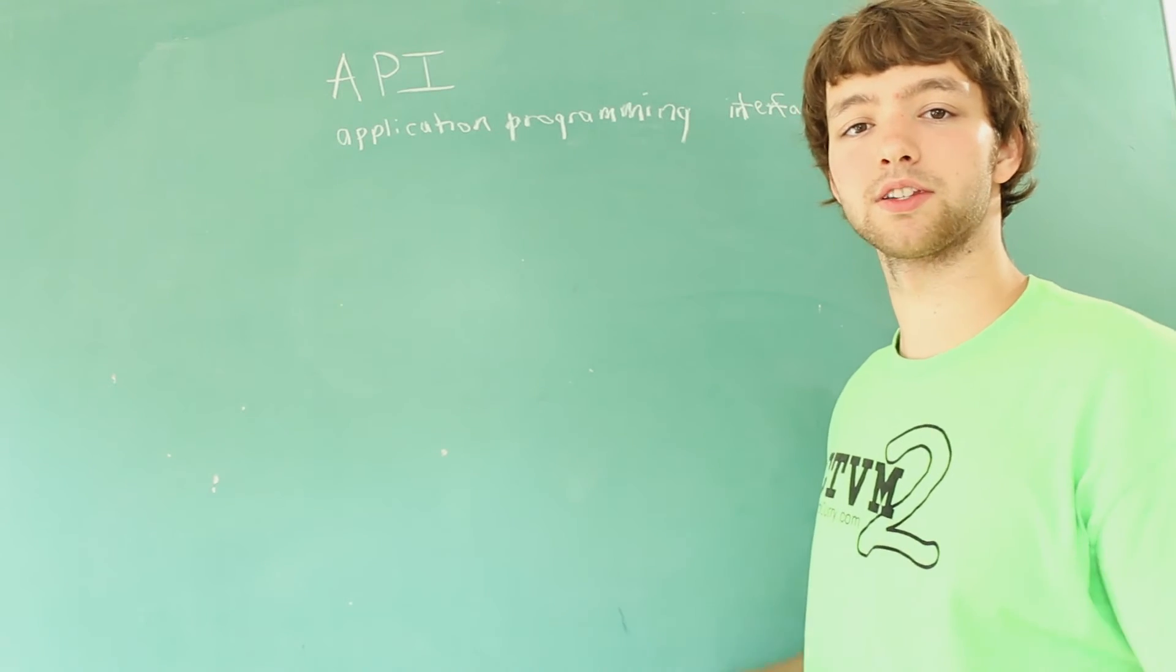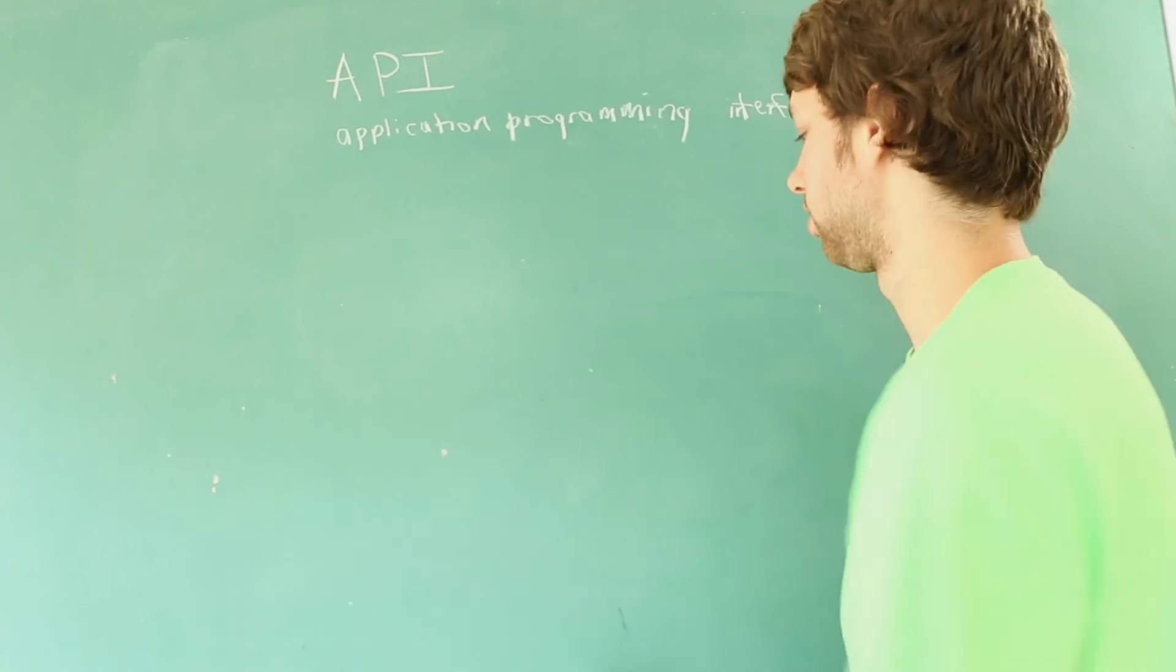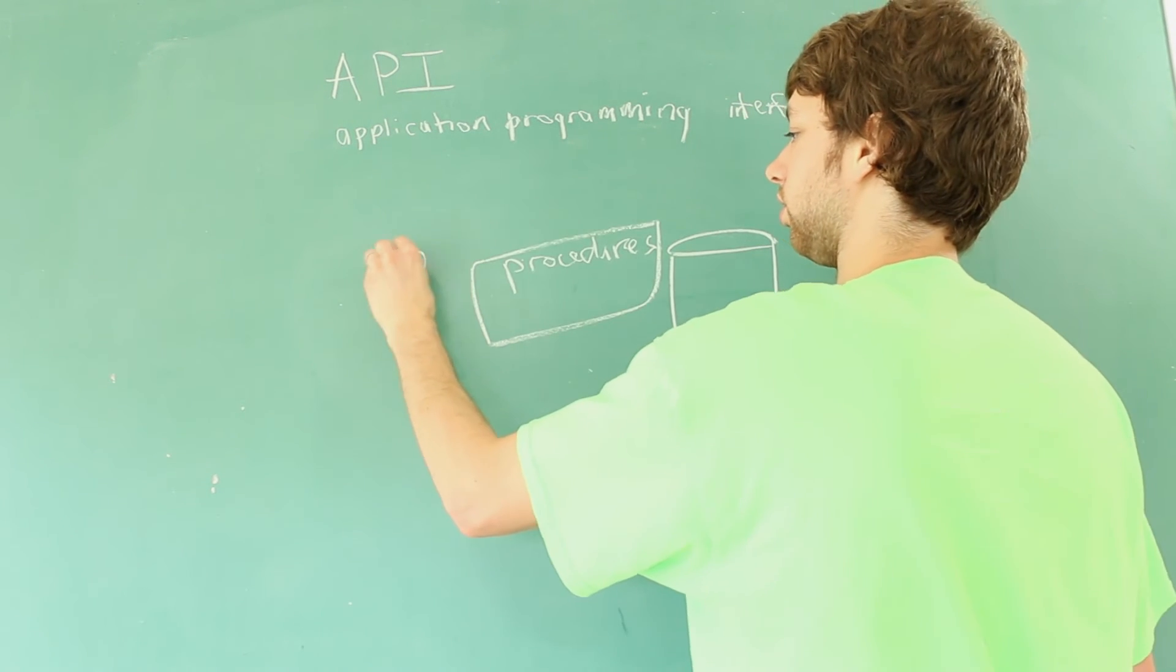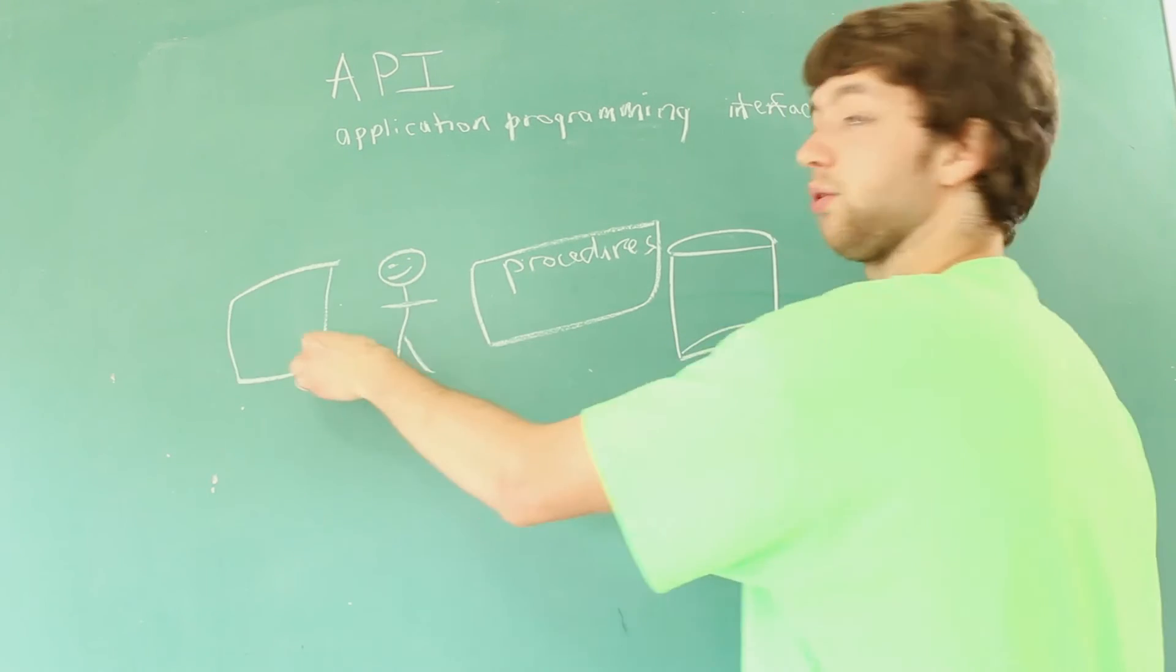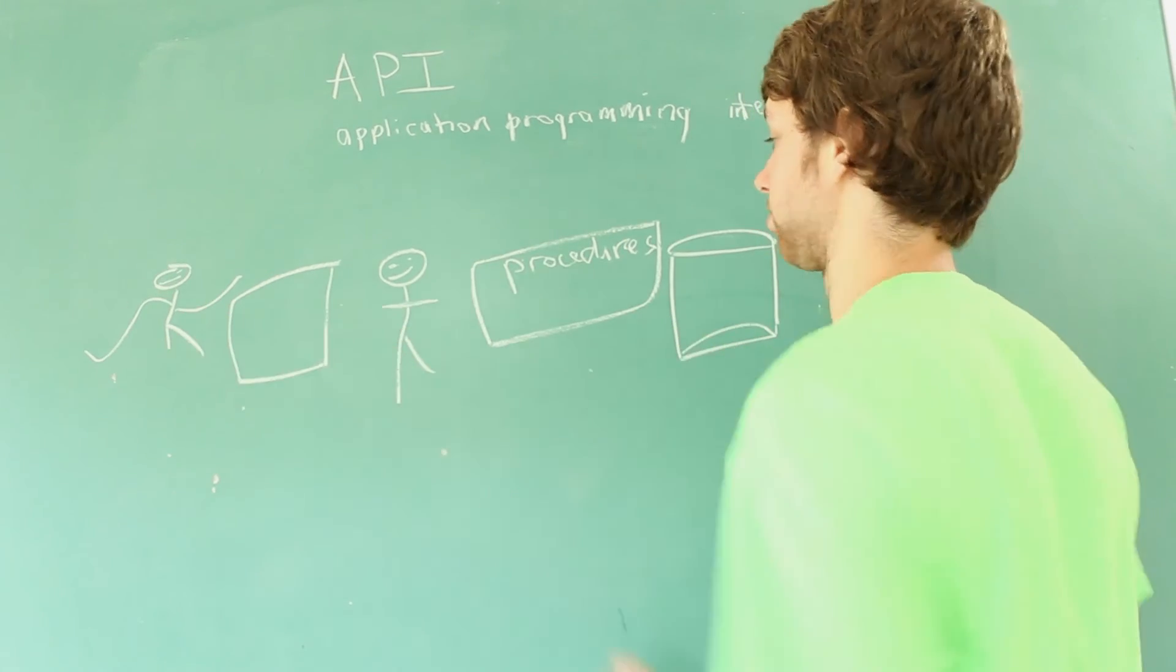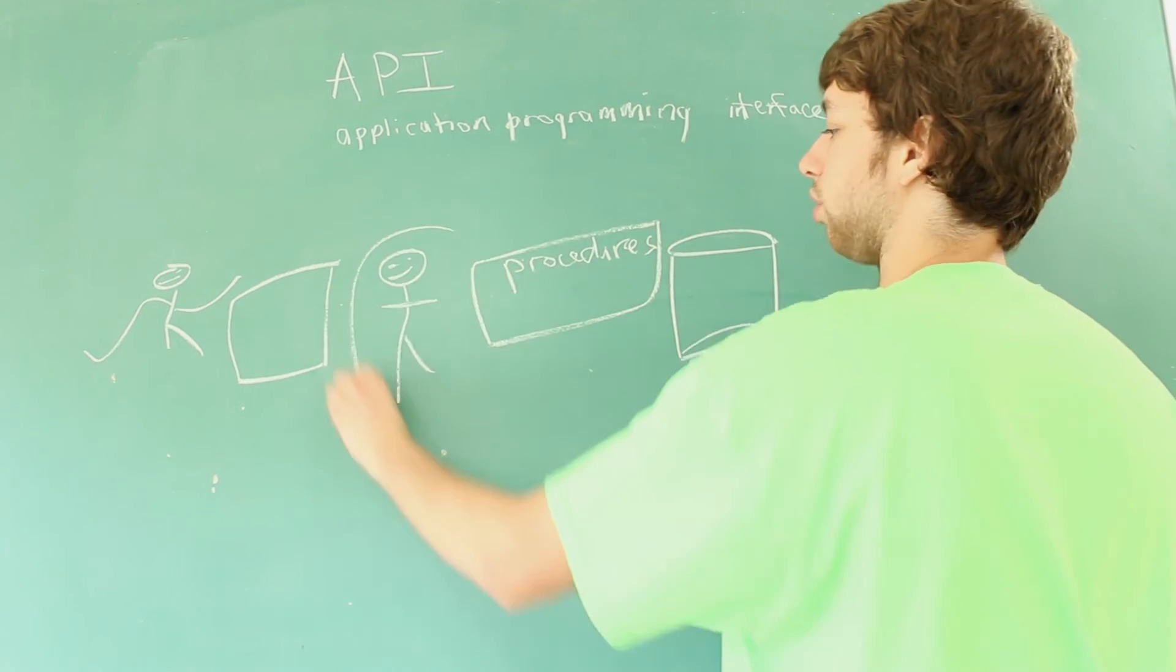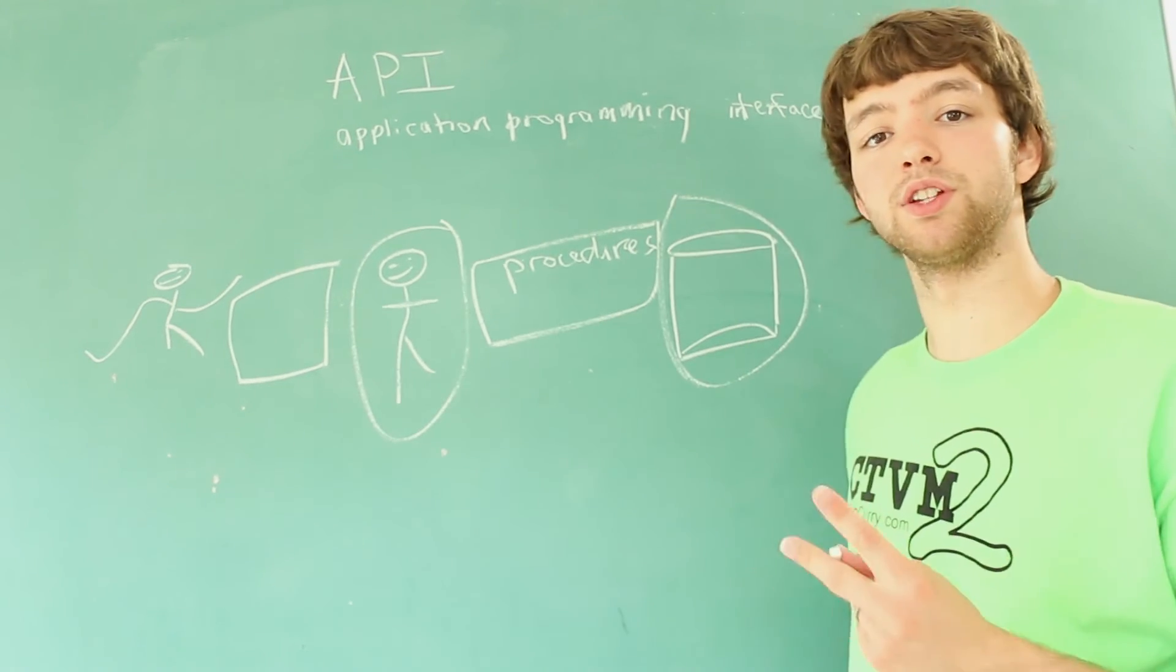Well in the MySQL context procedures are an API over your database. So here we have the database and then here we have procedures. Here we have programmers, here we have the software they develop and here we have the users. So by adding this extra layer of procedures you are creating an interface between the programmer and the database.